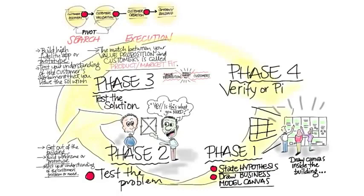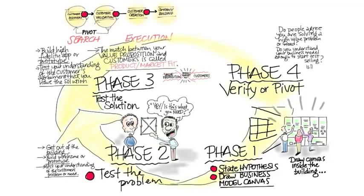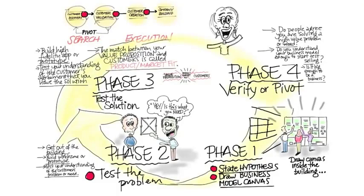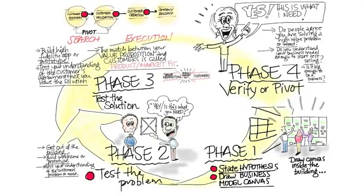And the fourth phase in customer discovery is you verify or pivot. Do people agree that you're solving a high-value problem or need? And do you understand your business model enough to start test selling, which is the next step in customer validation? Now what's really depressing to most entrepreneurs is the answer most often the first time you go through this is, heck no. You know, and what's worse is, well they kind of, sort of, like, well kind of sort of is not a startup. Kind of sort of is people have been nice to you. The only time you know that you have something that's worth investing your time and money in is if people are literally trying to force their money on you or can't use your product, even in its buggy, uninitialized form, enough. This is what you're looking for. And if you haven't found it yet, that's why the customer development process is an iterative circle. It assumes you will be going through this multiple times. And when you finally think you do have something that matches customer needs, you get to the next step, which is customer validation.